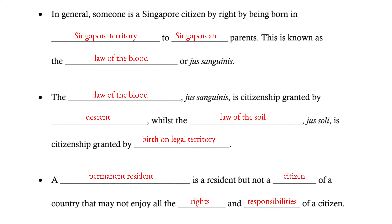What then is a permanent resident? A PR is a resident but not a citizen. They get to live permanently, as the name suggests, in this particular country, but they will not be able to enjoy all the rights associated with being a citizen. At the same time, they will also not need to fulfil all the responsibilities that are required of a citizen.